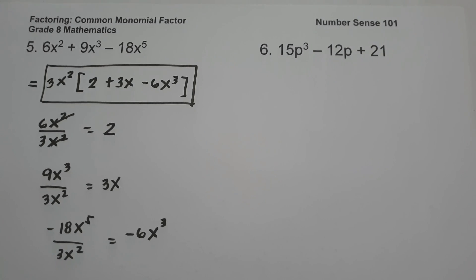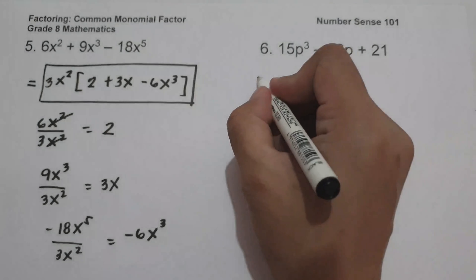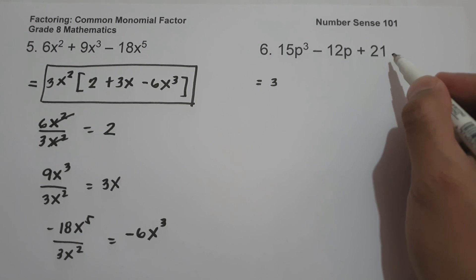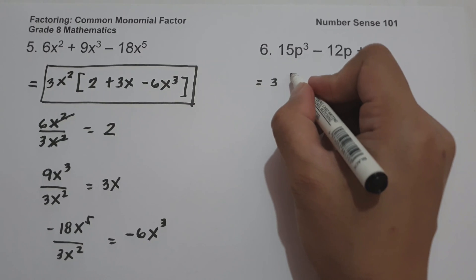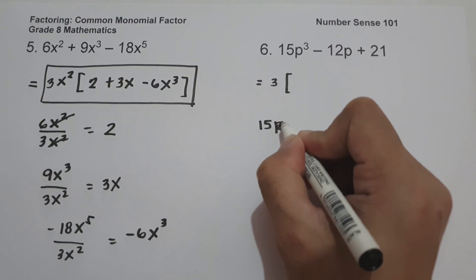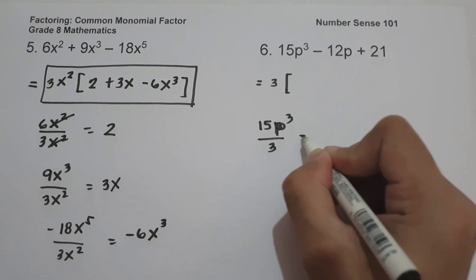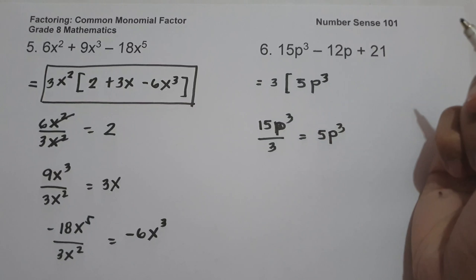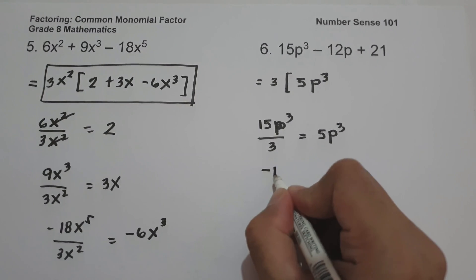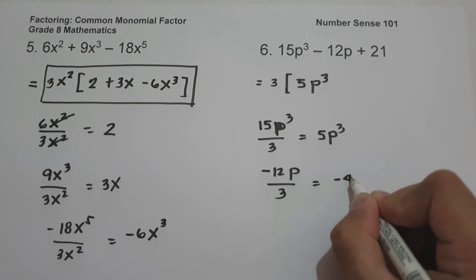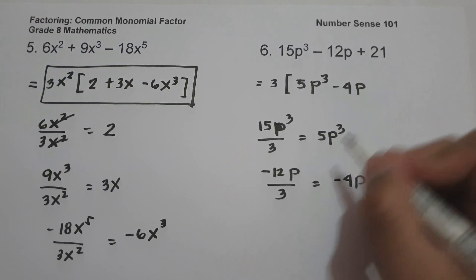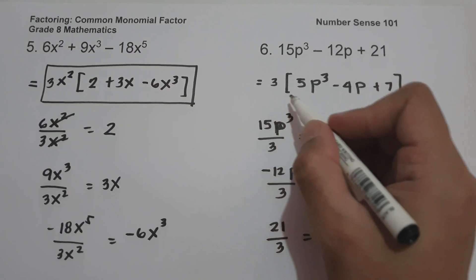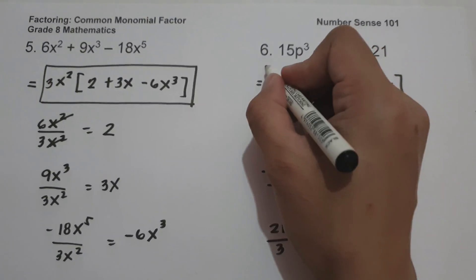On example number 6 we have 15p³ minus 12p plus 21. The greatest common factor of 15, 12, and 21 is 3. Since there is no variable p in our last term, 3 is our greatest common monomial factor. 15p³ divided by 3 is 5p³. Negative 12p divided by 3 is negative 4p. And 21 divided by 3 is 7. So we are going to have 3 times the quantity of 5p³ minus 4p plus 7, and this will be our answer.